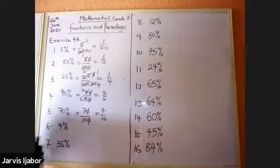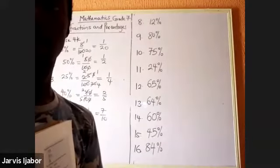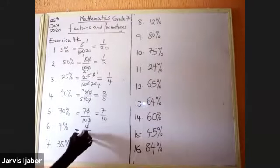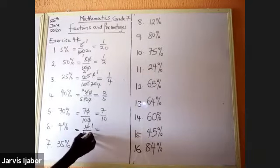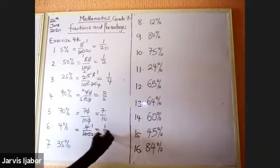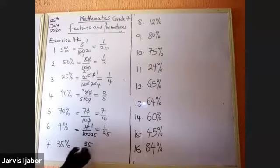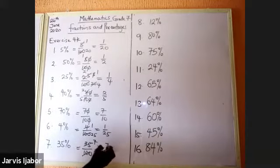Next: 40 over 100. 4 goes into 4 once, 4 goes into 100 twenty-five times — that's 2 over 5 area. Then 12 over 100: 4 goes into 12 three times, 4 goes into 100 twenty-five times — so that's 3 over 25.